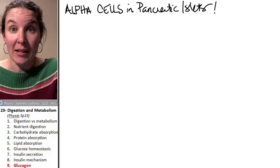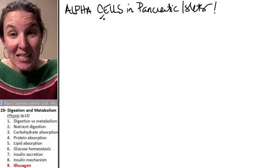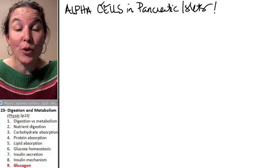Pancreatic islets are amazing. They have two kinds of endocrine cells. The beta cells produce insulin. The alpha cells produce glucagon.